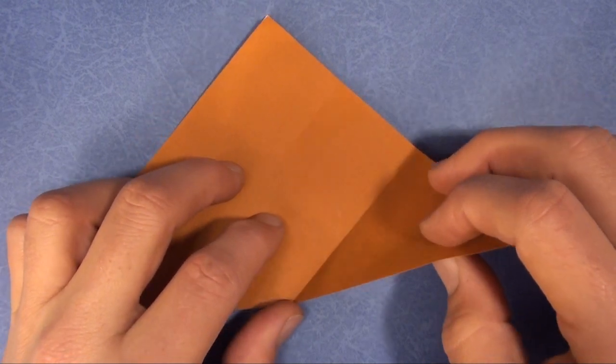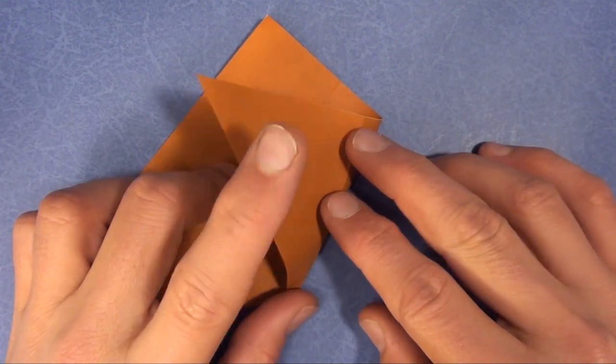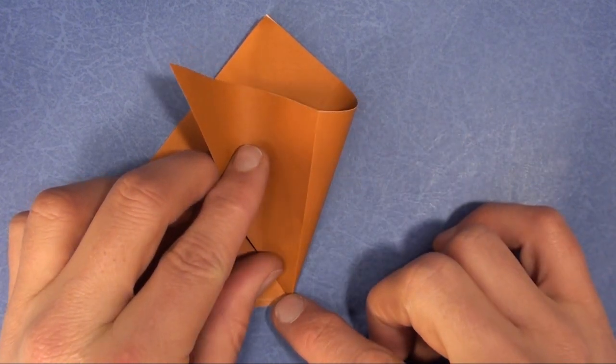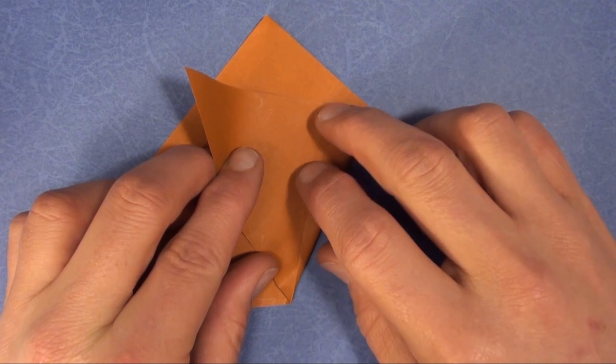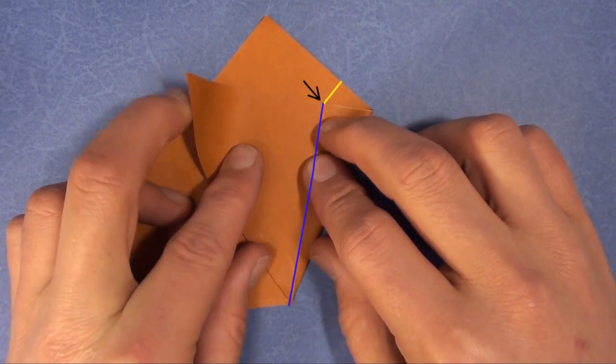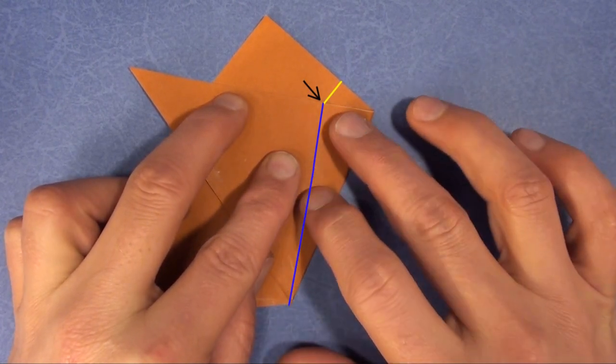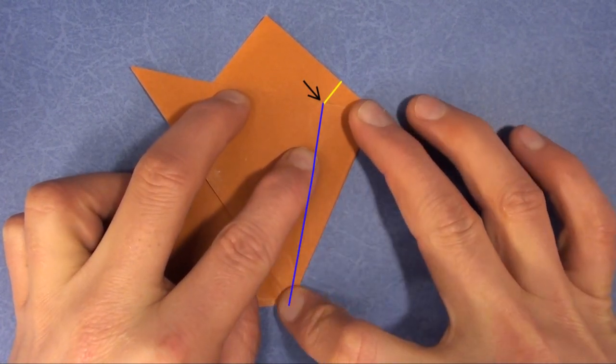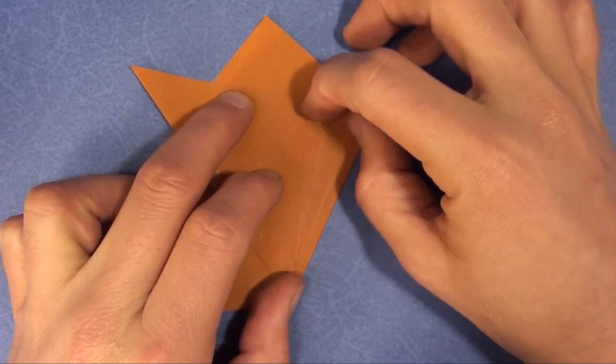And we're going to fold this flap and fold it over. The fold originates at the middle point. And you want to fold it until the creases line up. And then when they line up, just flatten it. Just like that. This is a fold that will achieve 60 degree angles.